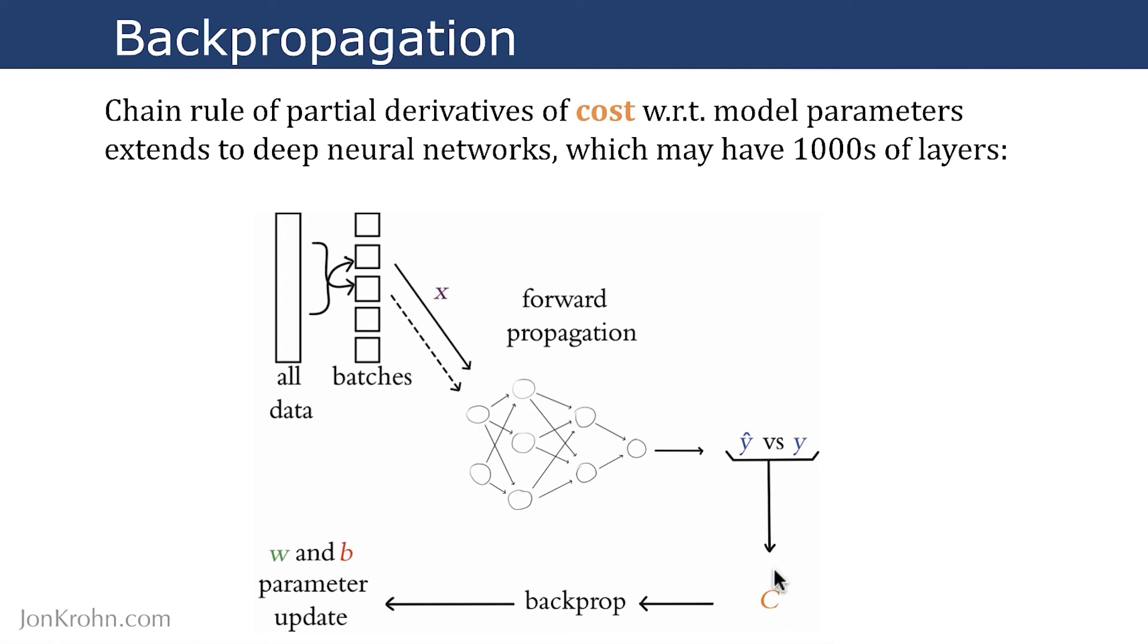Based on that cost, you use in PyTorch or in TensorFlow, you use autodiff to calculate the partial derivative of cost with respect to every single one of the model parameters in the model. There could be millions or billions of those parameters. But the theory is the same of everything that we've just covered. And so that backward pass, that automatic differentiation...